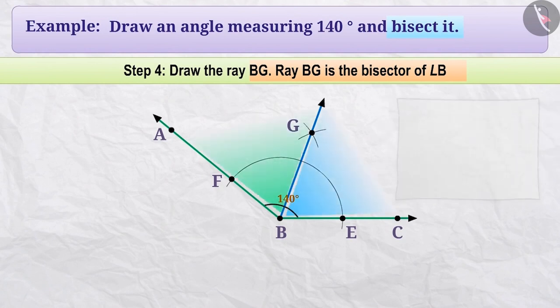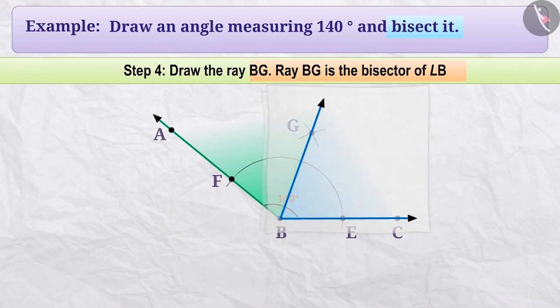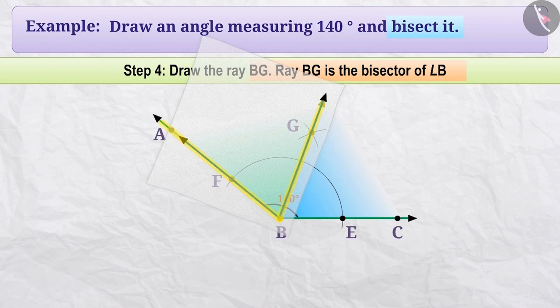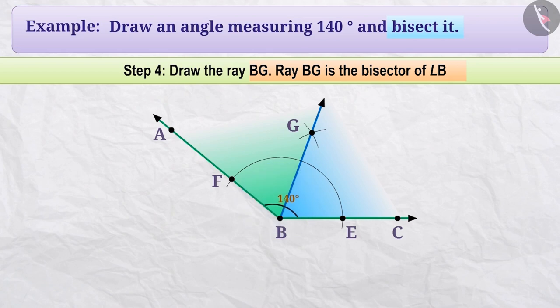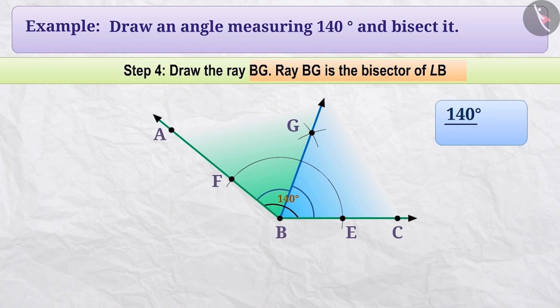With the help of a trace paper, if we draw the exact copy of one of the two angles obtained and place it over the other angle, the arms of both angles coincide completely, which proves that both angles are equal. This verifies that we have properly bisected the angle measuring 140 degrees, giving us two angles each measuring 140 ÷ 2 = 70 degrees.